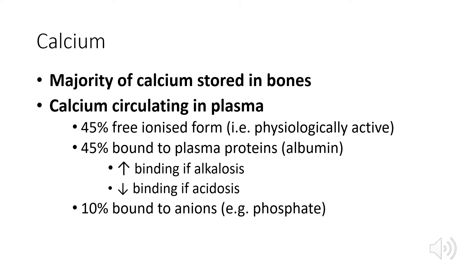When you're looking at a serum calcium, you need to know that it's made up of three different components. There's a fully ionized component that's physiologically active — if it's high or low, it gives you symptoms and signs of hyper or hypocalcemia. There's also a proportion bound to plasma proteins like albumin, which you need to correct for. For example, in a patient with hypoalbuminemia, you might think you have a low serum calcium, but when you correct for albumin, the ionized component may actually be in the normal range.